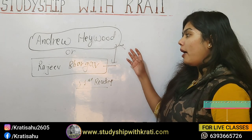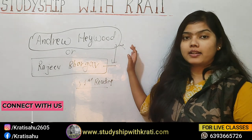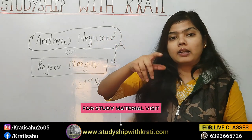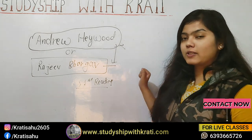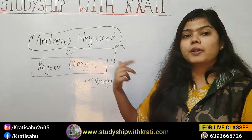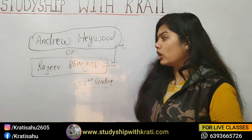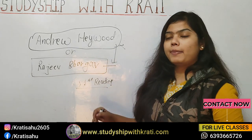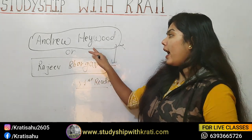Regarding buying the books — if you can buy them, great; if not, Andrew Heywood's latest edition is the 6th edition. I will try to share it in our Telegram group called 'Polscience' — check the description box for the link. Rajiv Bhargav covers only a few chapters, so you can keep a printout as a small booklet. Andrew Heywood will be useful across many topics.